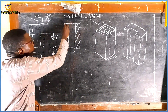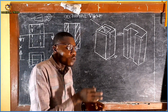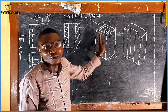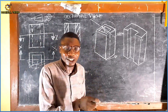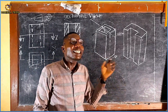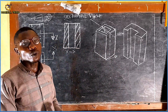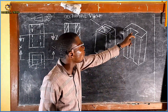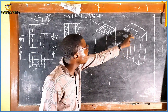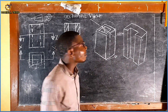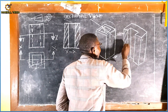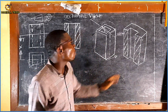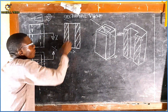Where do section lines come from? Imagine picking a knife or a saw blade and trying to cut through this object. The section lines appear on the areas where your saw blade actually touches the material as you cut through. As I go through this object, the saw blade floats through the gap in the center — it is only touching this edge and this edge. So it is only on those two edges that section lines are drawn.